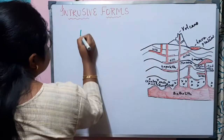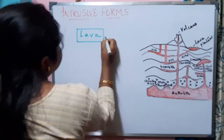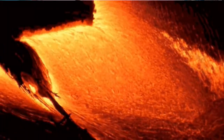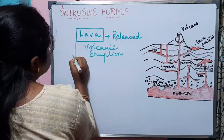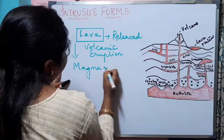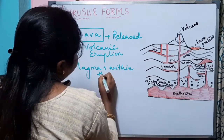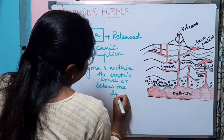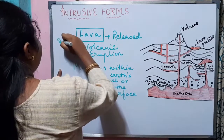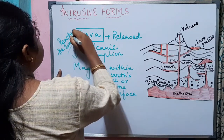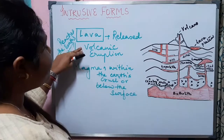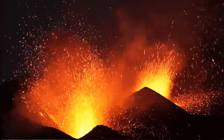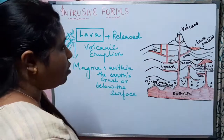The lava is released by volcanic eruption. We have already learned that we call the molten material 'magma' when it is within the earth's crust or below the surface, and we call it 'lava' when it reaches the earth's crust or above the surface. The lava comes out and reaches the surface when volcanic eruption occurs.